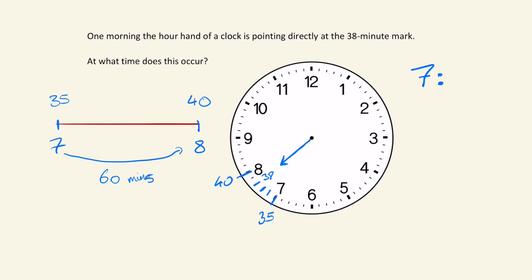So what does the minute hand do relative to that hour hand? We have 36, 37, 38, 39 — so we have 5 steps. This is 36, 37, 38, 39. If we have 5 steps and it takes 60 minutes, that means each step must be 12 minutes long, because that's what 60 divided by 5 is.